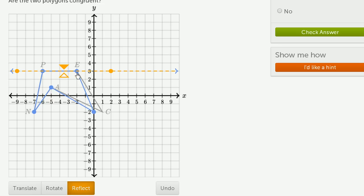See, when I reflect it, this point, this point, this point, and this point seem to be in the exact same place. But point C does not correspond with that point right over there.